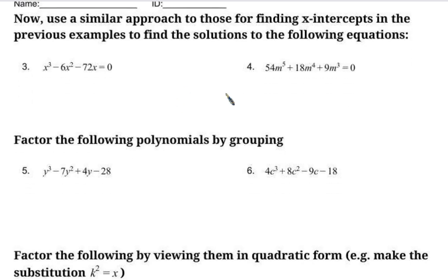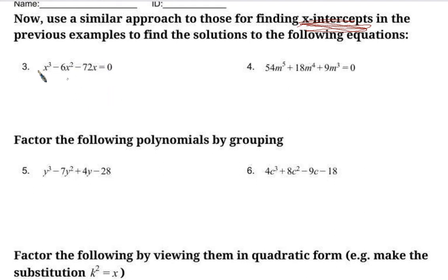Now that we see how x-intercepts relate to inputs and outputs of the function, to solve an equation we use a similar approach — set it equal to 0. The difference is this equation didn't start life as y = x³ − 6x² − 72x; it's just an equation equal to 0. When we solve it, we haven't found x-intercepts — we've found the solutions to the equation. Those numbers are called solutions rather than x-intercepts.